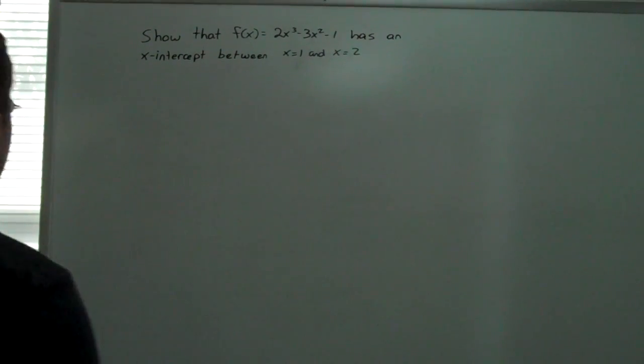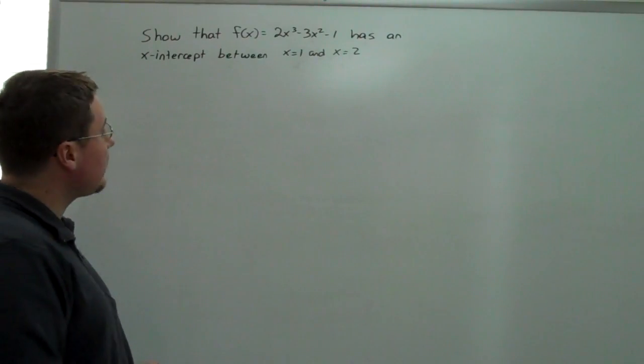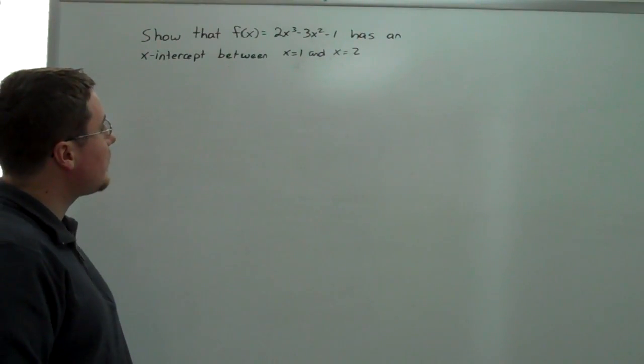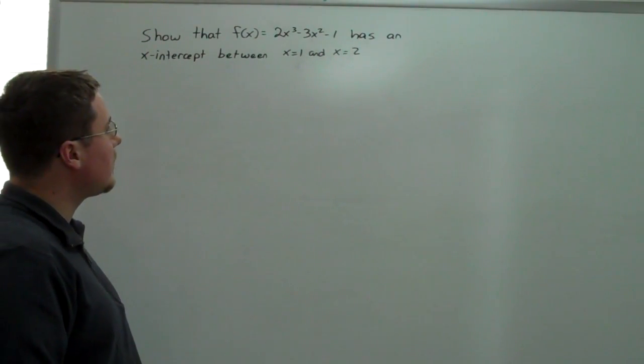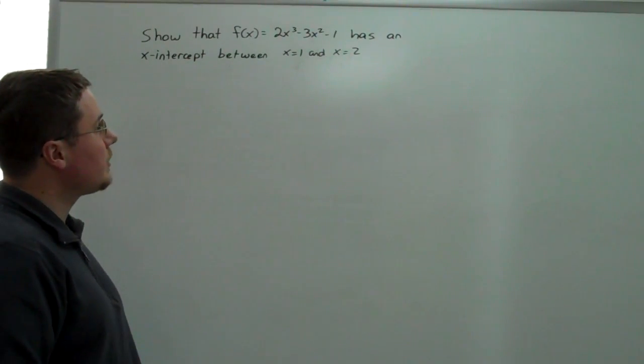All right, so for the first polynomial problem we're going to deal with, we're going to use the intermediate value theorem to show that f of x equals 2x to the third minus 3x squared minus 1 has an x-intercept between x equals 1 and x equals 2.